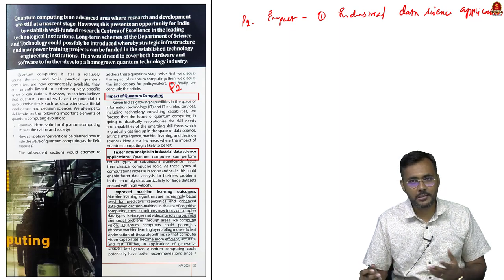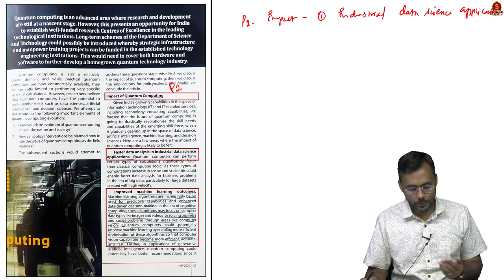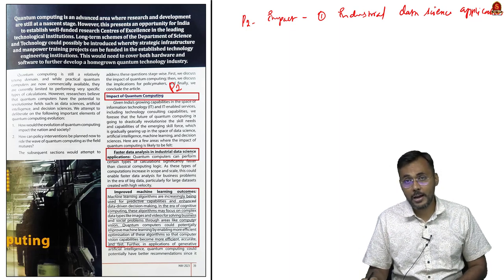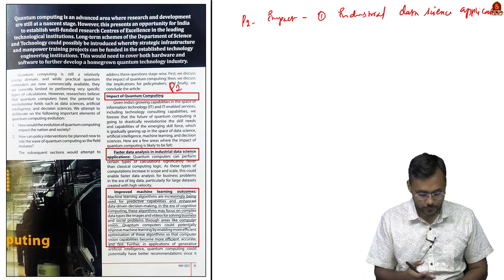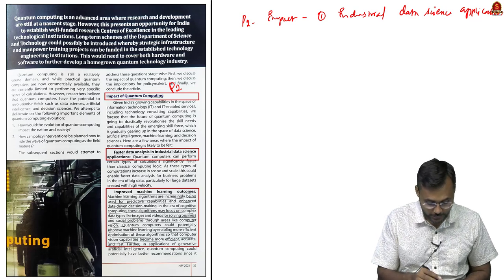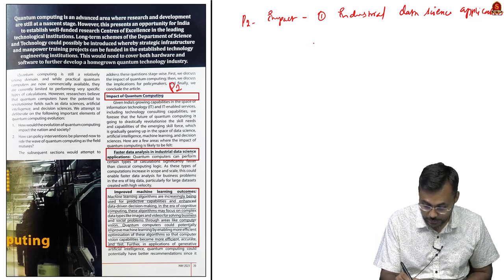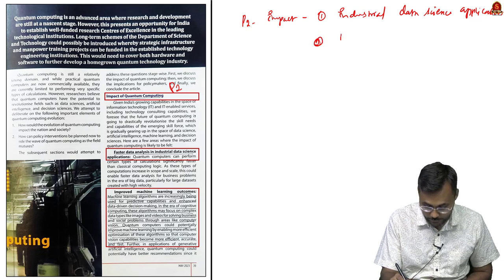Examples include wind tunnel testing to see where pressure occurs on an automobile when driven fast, and designing aircraft like the LCA light combat aircraft. All these can be performed effectively through quantum computing. The second application area is machine learning outcomes.